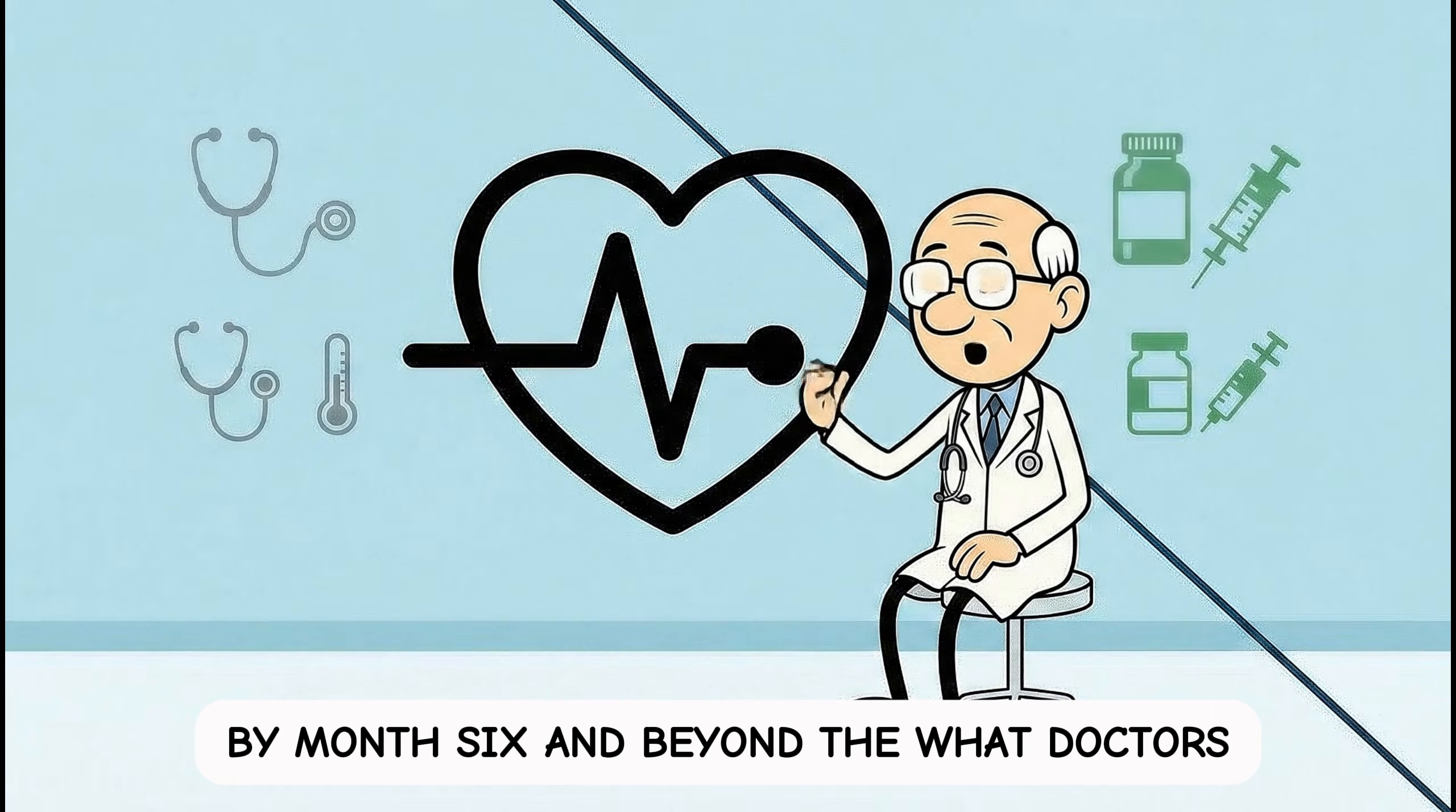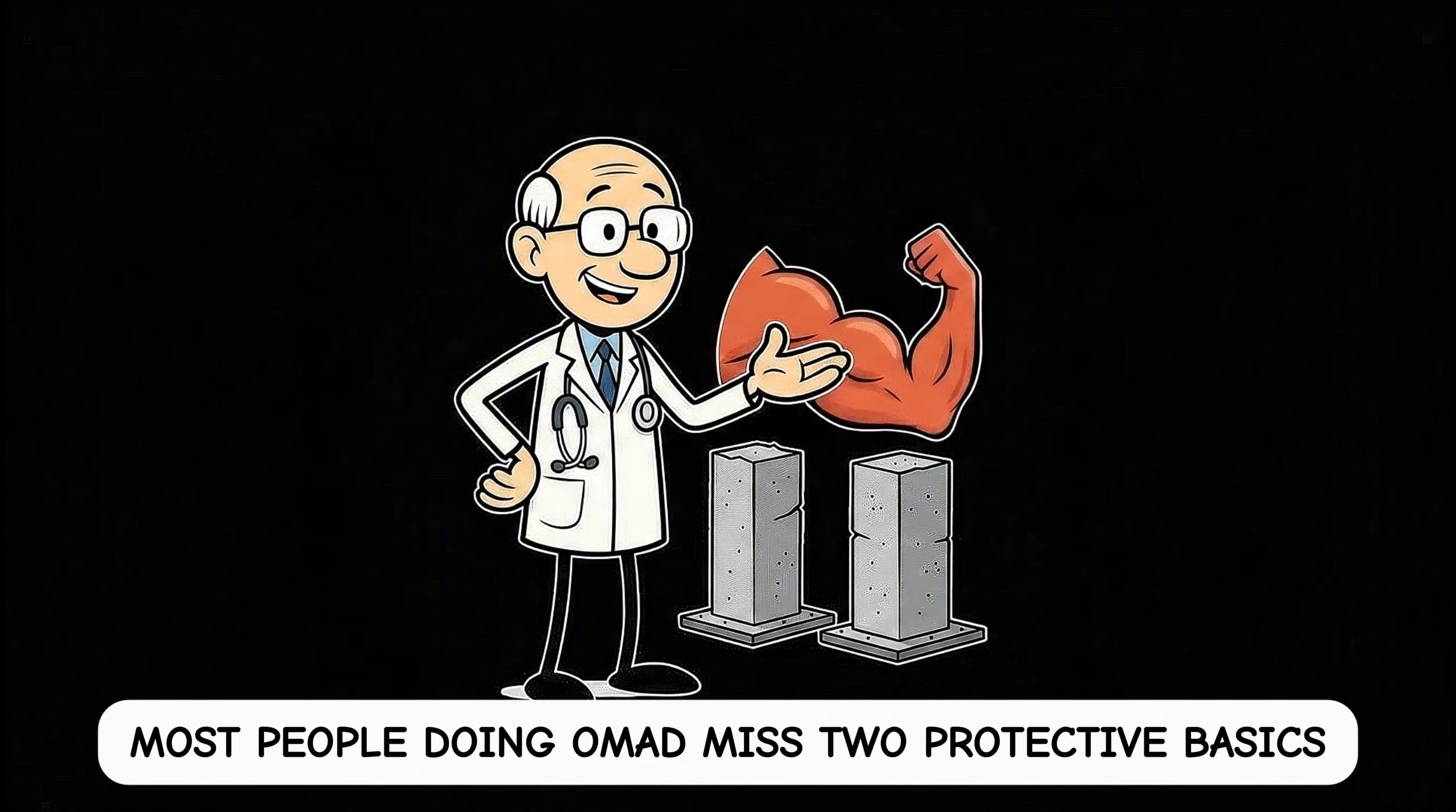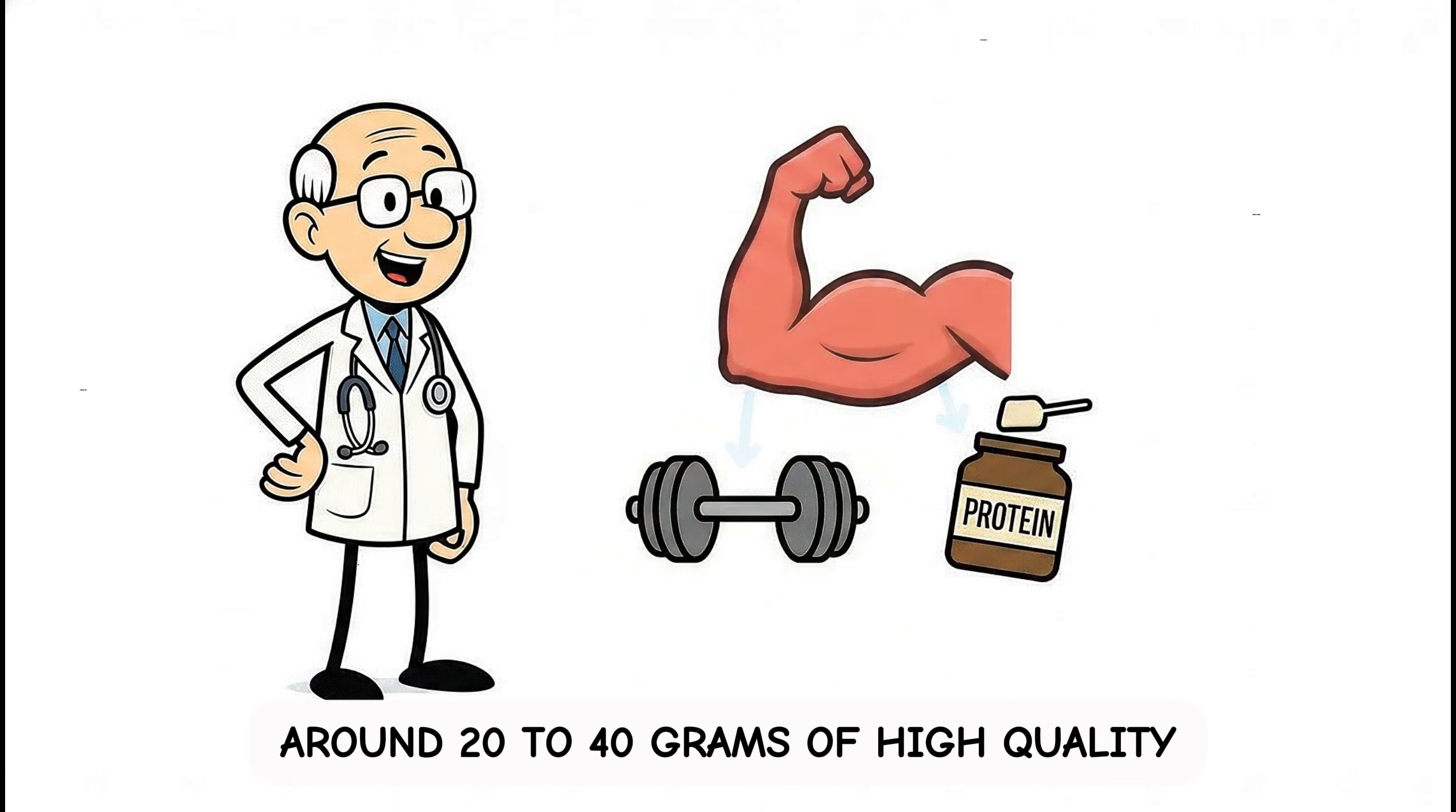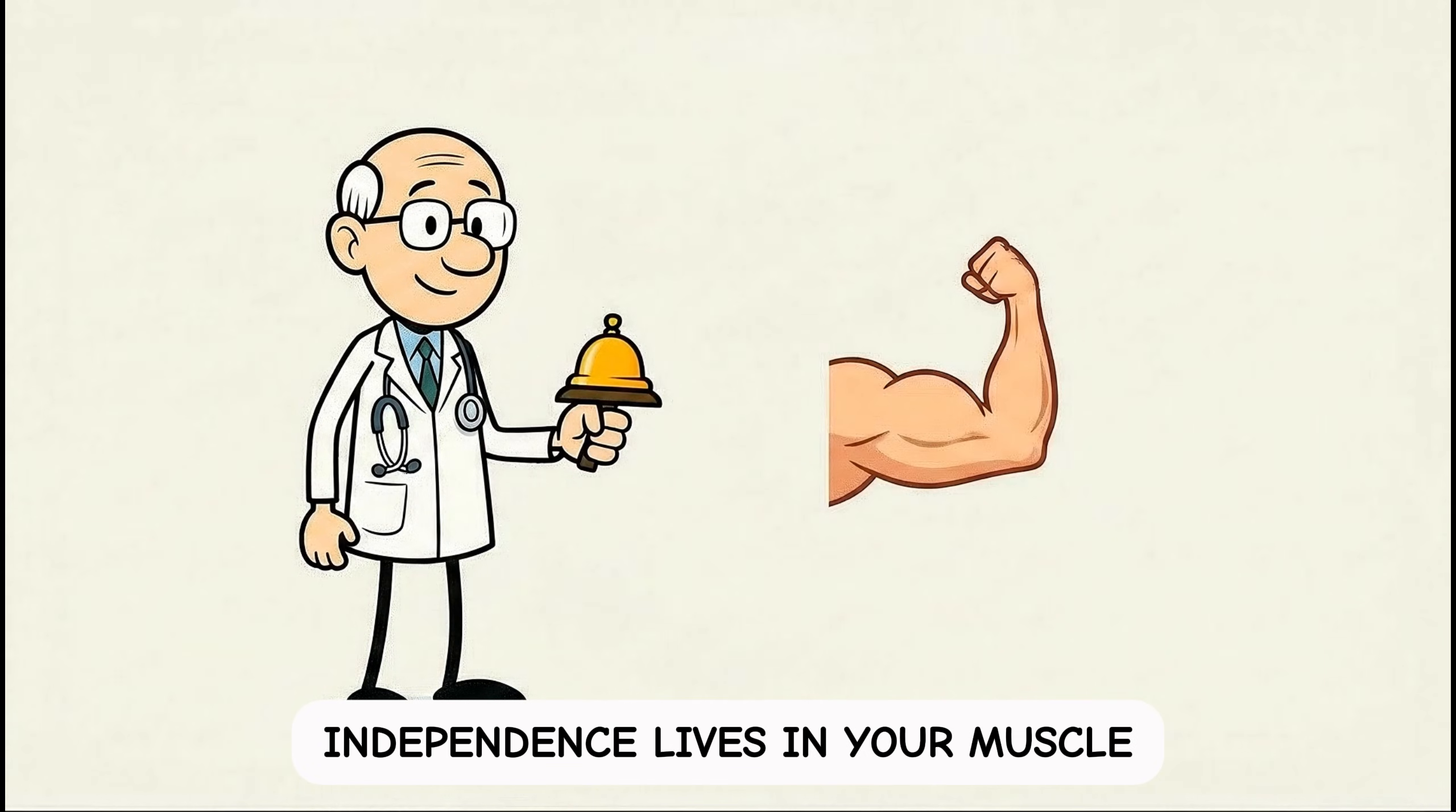By month 6 and beyond, the what-doctors-won't-tell-you part usually isn't a conspiracy. It's just not the headline in a 10-minute appointment. The headline is weight. The hidden invoice is strength, balance, mood, and the ability to keep living like you. Most people doing OMAD miss two protective basics, consistent resistance training, and enough protein in doses your muscles can actually use. The ISSN position stand even notes typical per-serving targets around 20 to 40 grams of high-quality protein, or about 0.05g/kg, to reliably trigger muscle protein synthesis. Hard to do if you only ring the bell once a day. That's the value of the long game. Independence lives in your muscle.